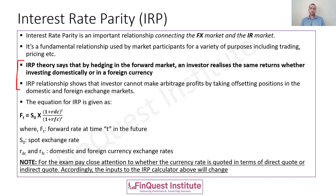The Interest Rate Parity theory says that by hedging in the forward market, an investor realizes the exact same return whether investing domestically or in the foreign currency. The IRP equation also shows that it is not possible for the investor to make arbitrage profits by taking offsetting positions in the domestic and foreign exchange markets.